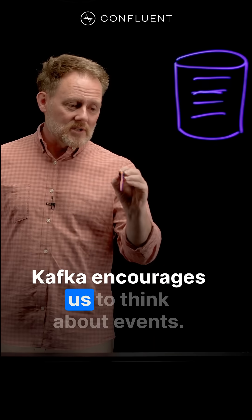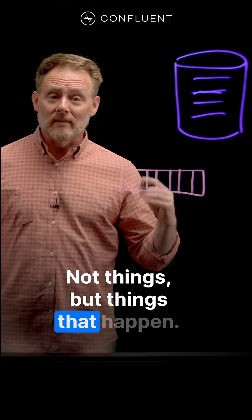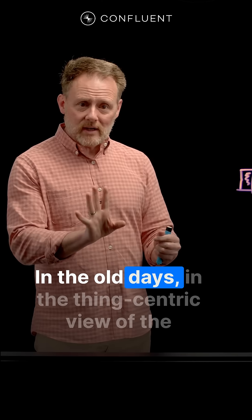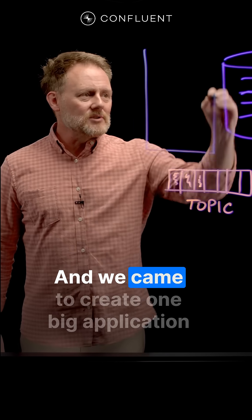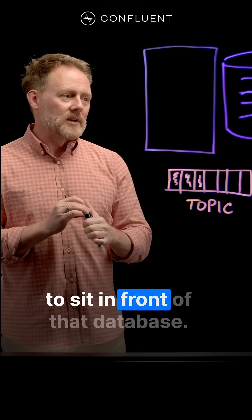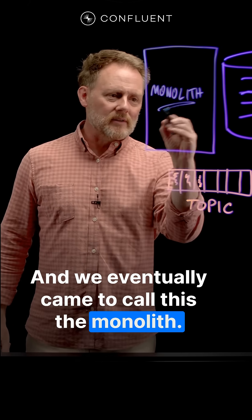Kafka encourages us to think about events, not things, but things that happen. In the old days, in the thing-centric view of the world, we had a database and we came to create one big application to sit in front of that database. And we eventually came to call this the monolith.